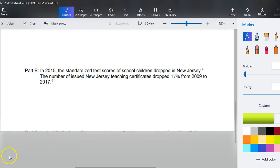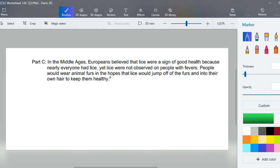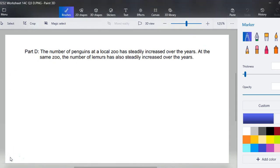Part C. If you have not already looked at this and made your decision, you need to go look at Part C and then come back. In the Middle Ages Europeans believed that lice were a sign of good health because nearly everyone had lice. Lice were not observed on people with fevers, so people would wear animal furs in the hopes that lice would jump off of the furs and onto their own hair to keep them healthy. Do you think this warrants further study? No, because it was coincidental. Lice do not cause good health.